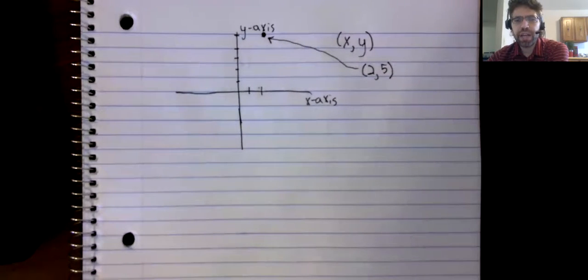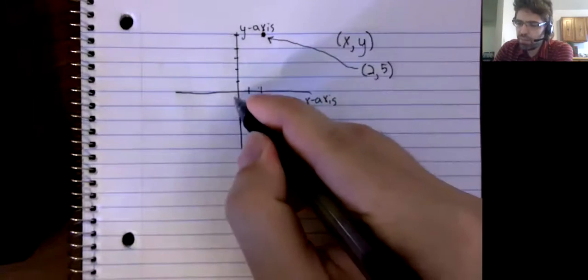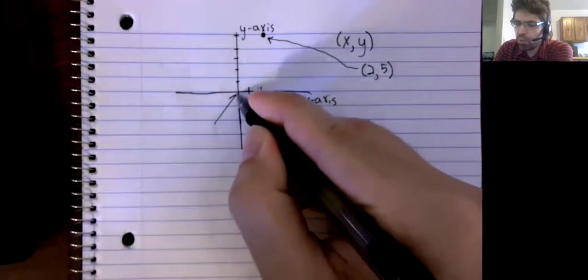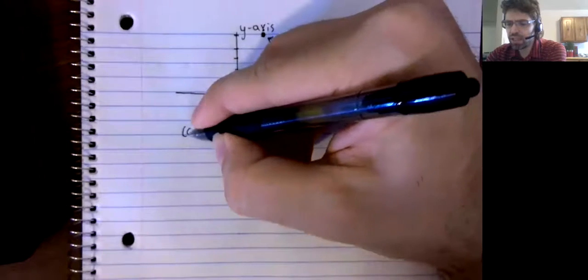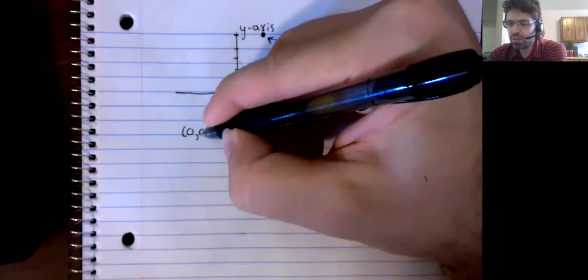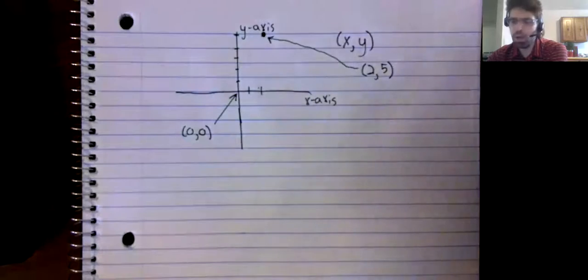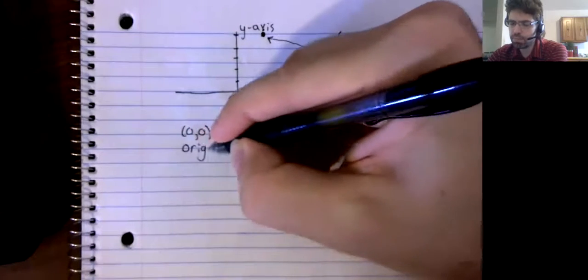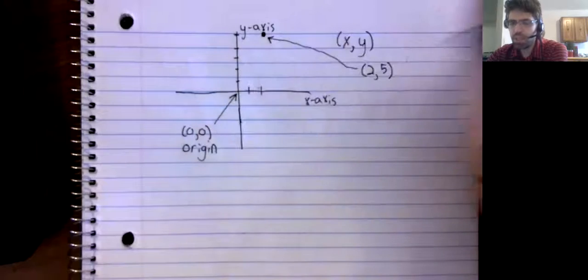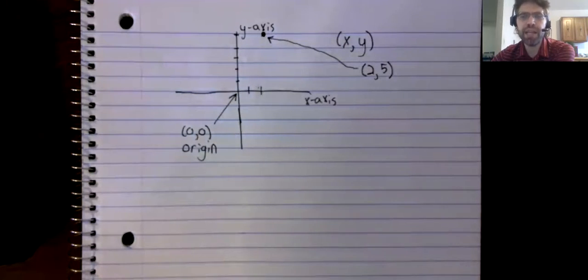Let's nail down a few definitions. The point where the number lines intersect is zero comma zero, and it's called the origin. It has its own name.